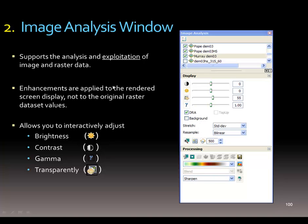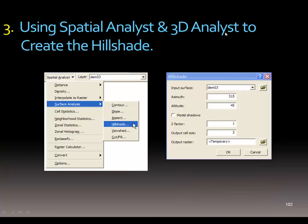None of these first two methods are applied to the original data — nothing new is created, this is just for displaying. In method three, using spatial analysis or 3D analyst, you actually calculate a new surface. You fill in those same values plus the z factor, where you would change from meters to feet — for example, entering 3.28 for how many feet in a meter. That's the general idea of how this is calculated.